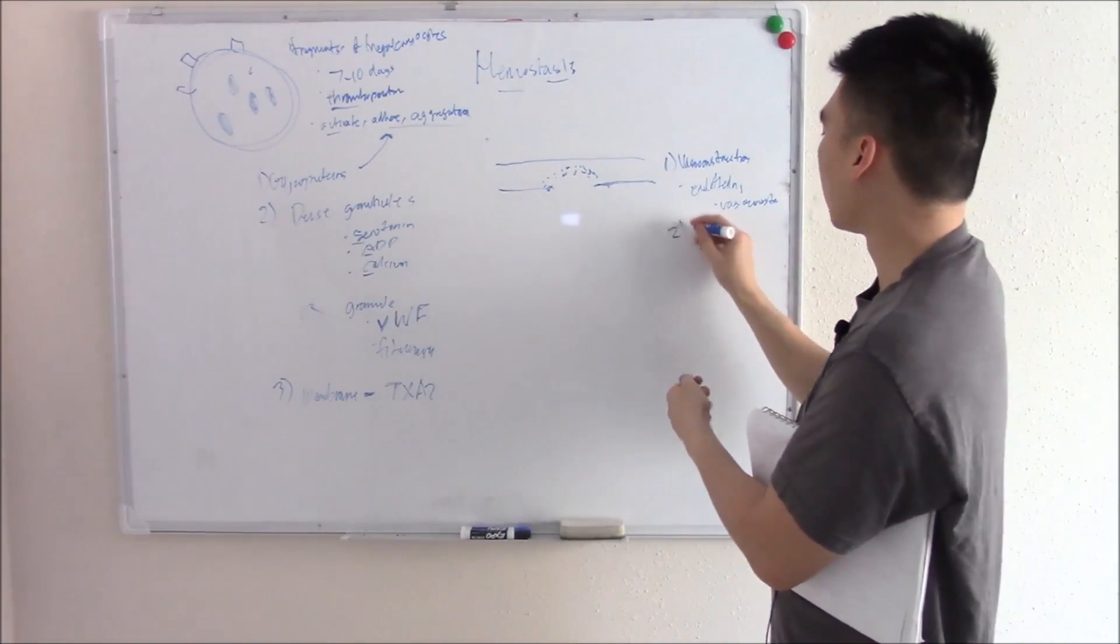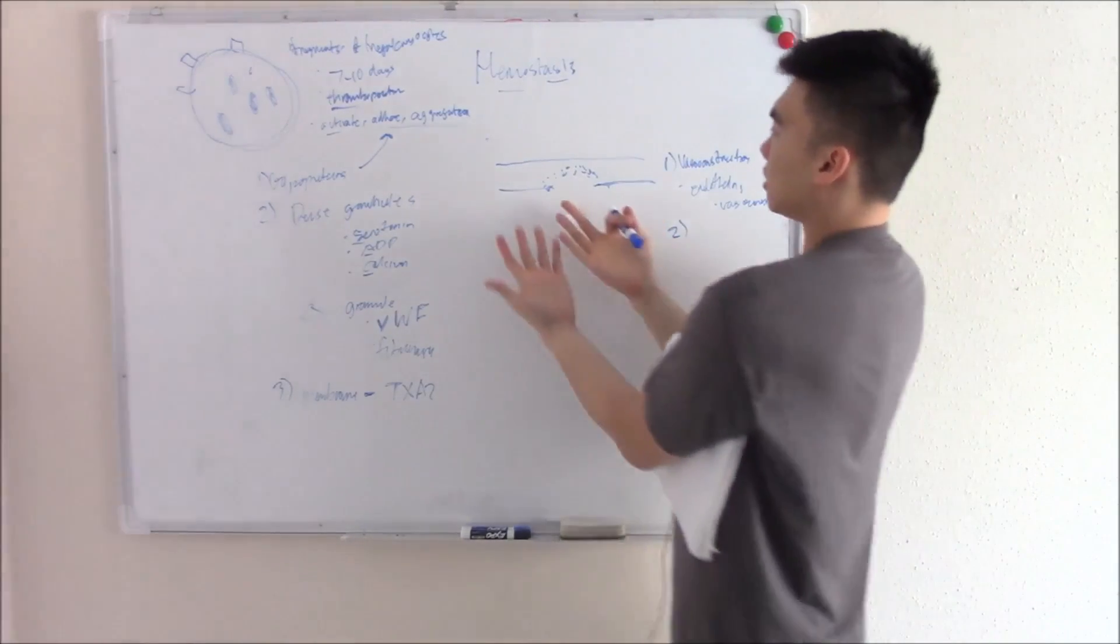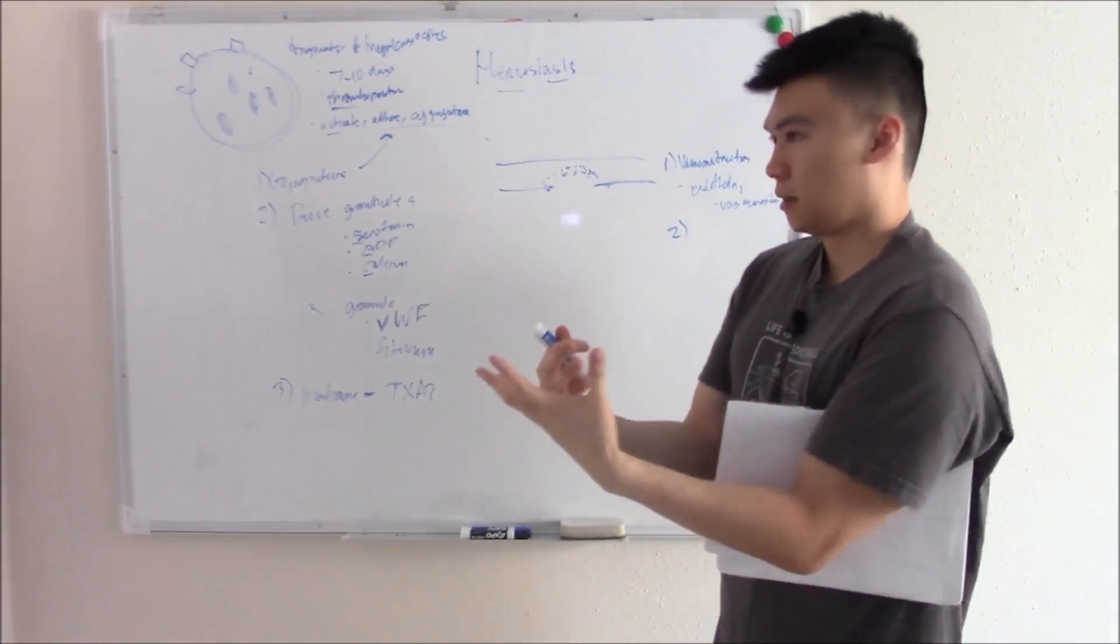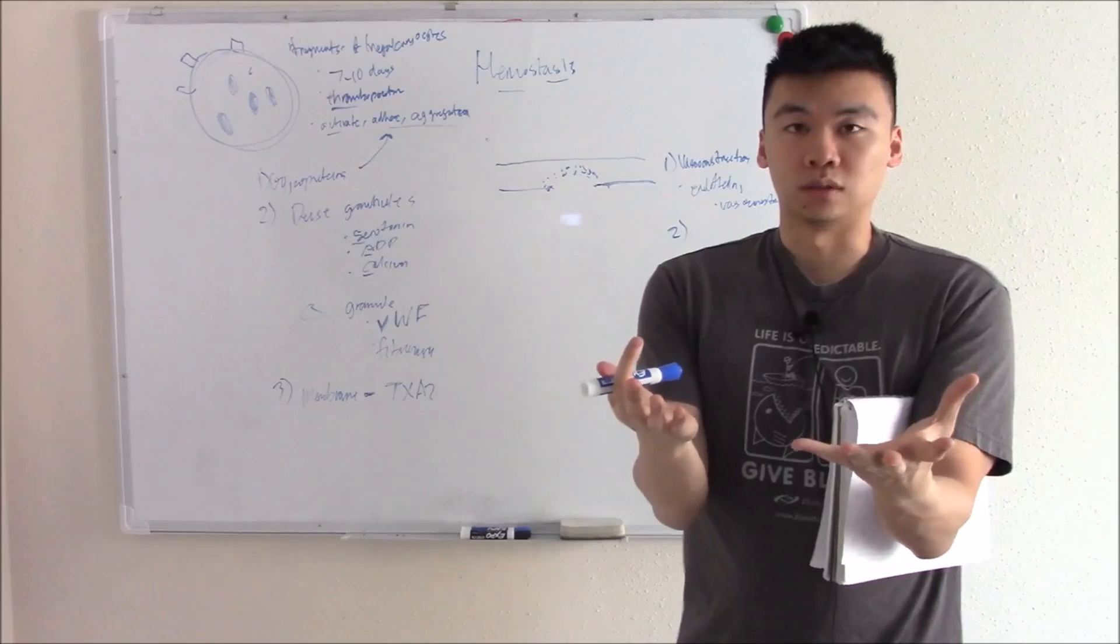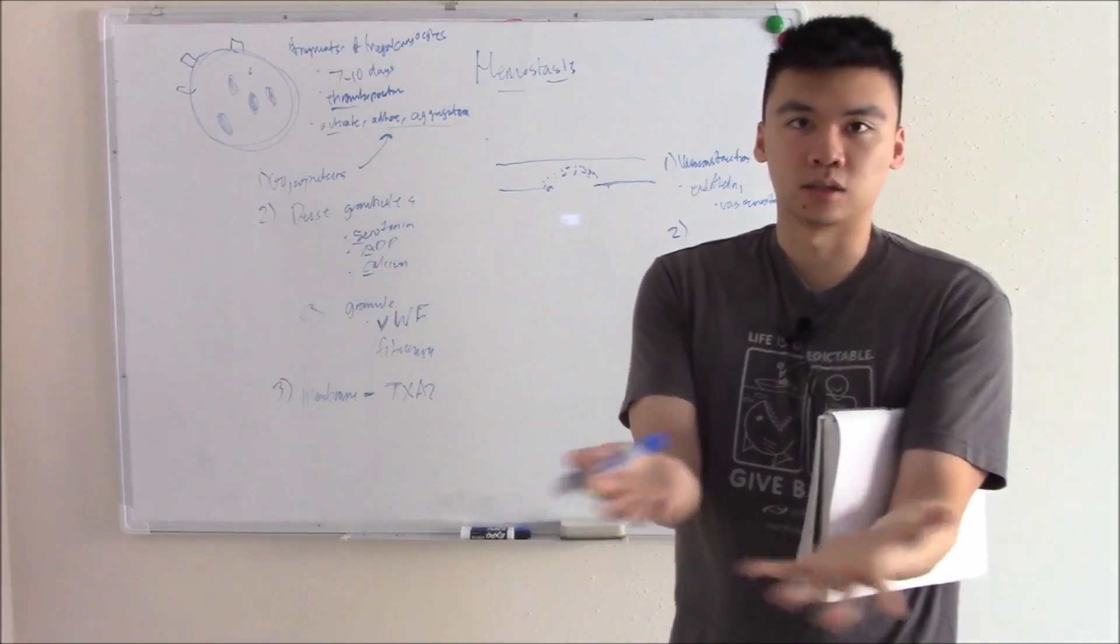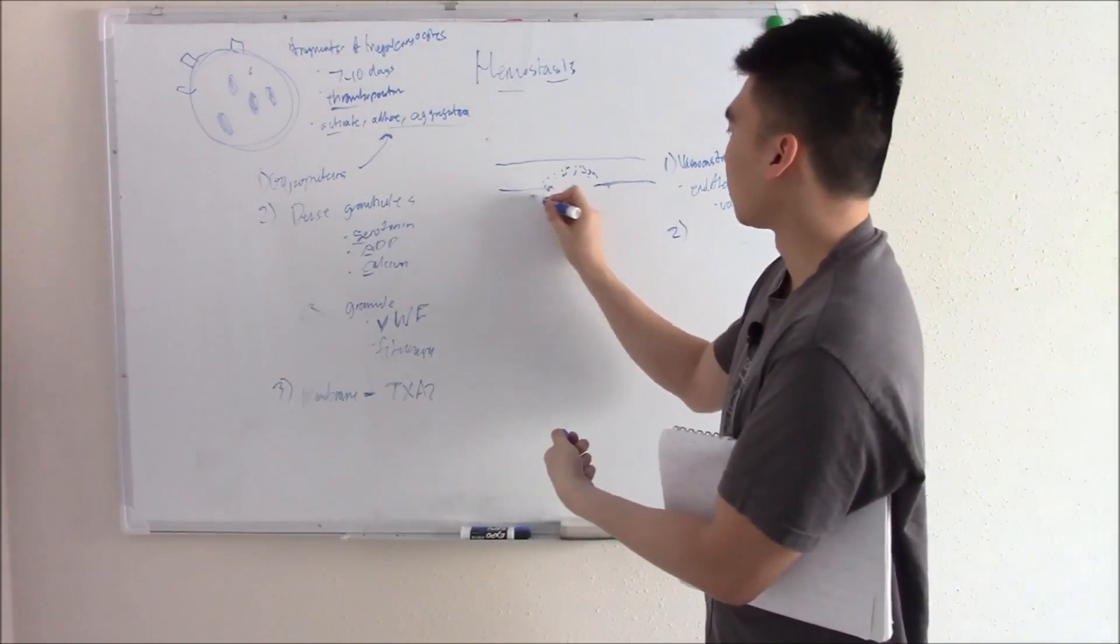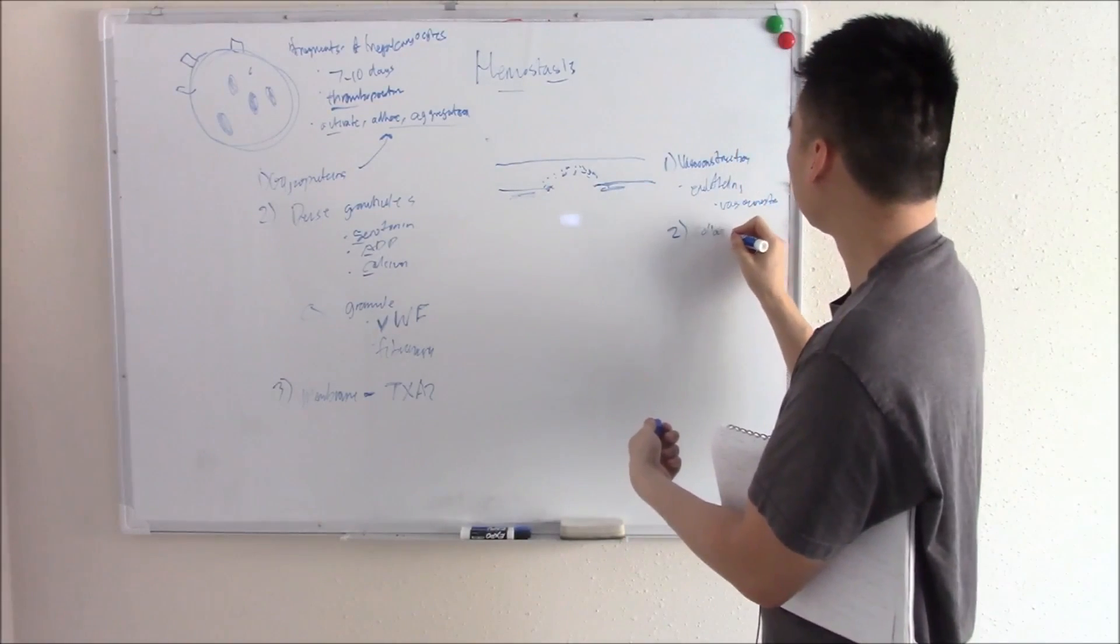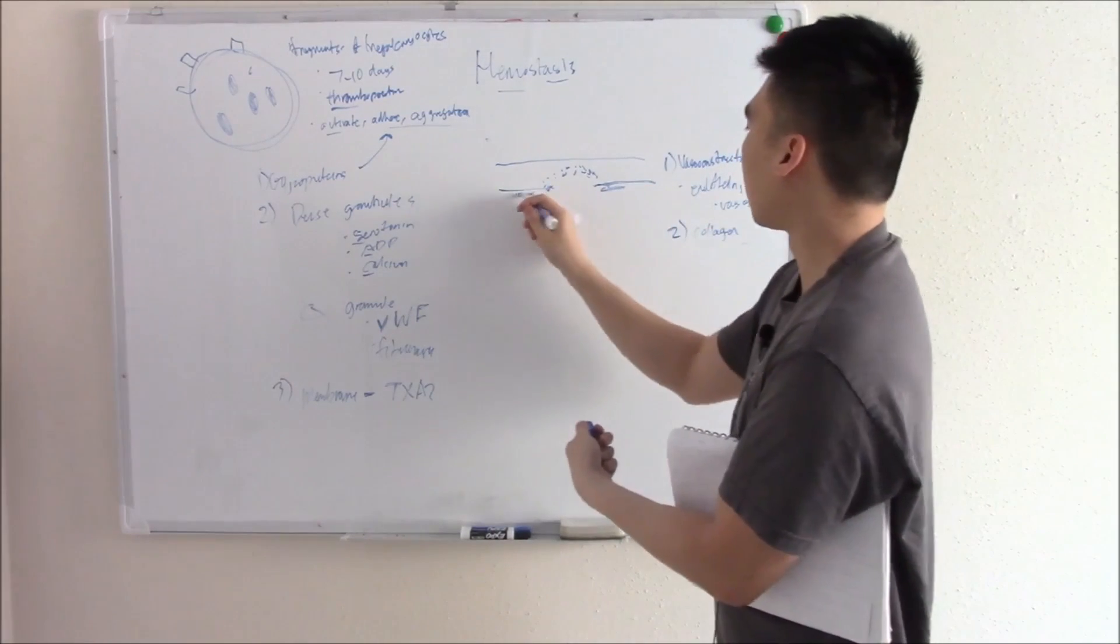The second step, when you have a break, you expose the innards, the insides to the outside, and your body sees that and says that's not normal. Things like collagen from the inside, things like von Willebrand factor.